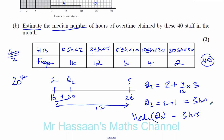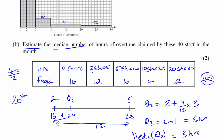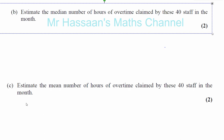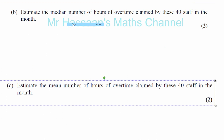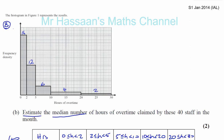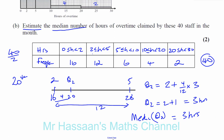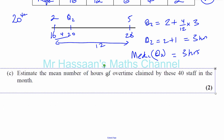That's part B done now. Part C is very much similar to this. Part C says: estimate the mean number of hours of overtime claimed by these 40 staff. So we've estimated the median, and now we're going to estimate the mean.